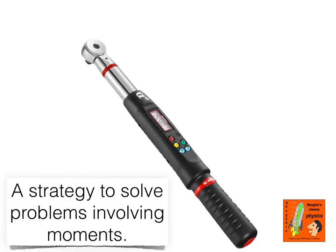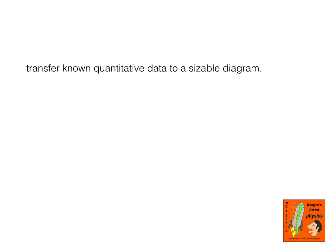You'll often be given a setting whereby a lot of data is given in a written description. My suggestion would be to transfer any known quantitative data from the question and put it into a sizeable diagram. Why I say sizeable is because you're going to be adding lots of information to it, and if you make the diagram too small it'll get cluttered and it'll be very hard to determine what's actually going on. Once you've got the data, look for any data you can derive from the question and add that to your diagram as well.